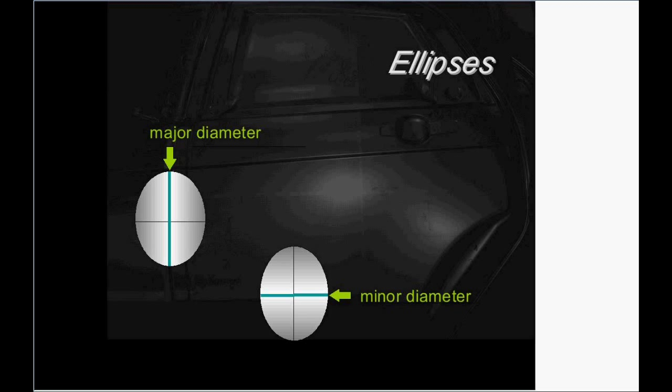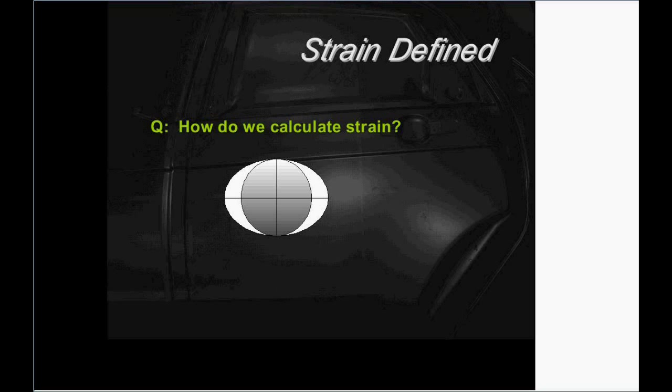If the circle deforms into simply a larger circle, that's just a special case of an ellipse where the major equals the minor. Then what have we got? We've got strains in both the major and the minor.